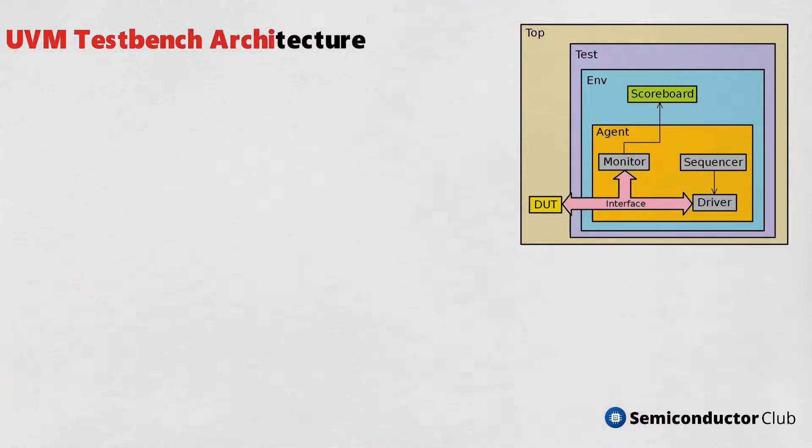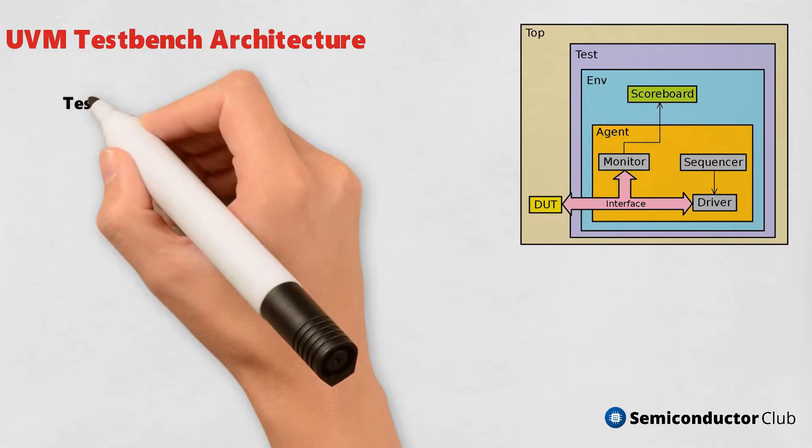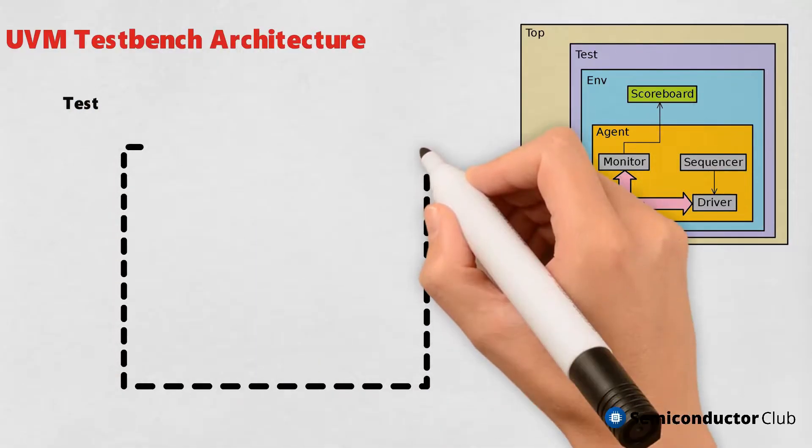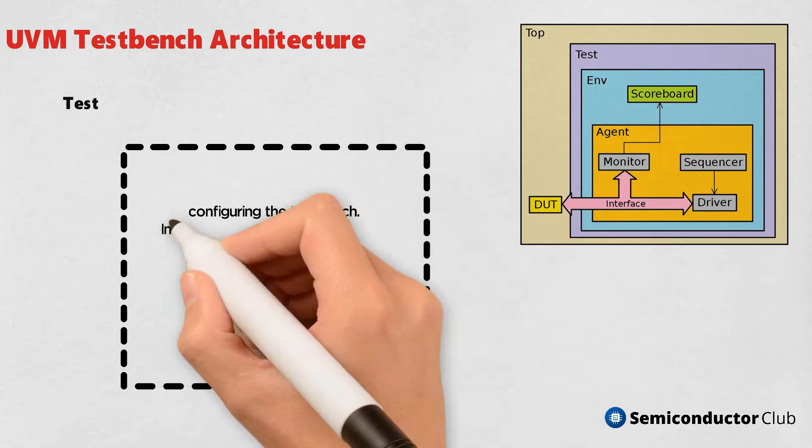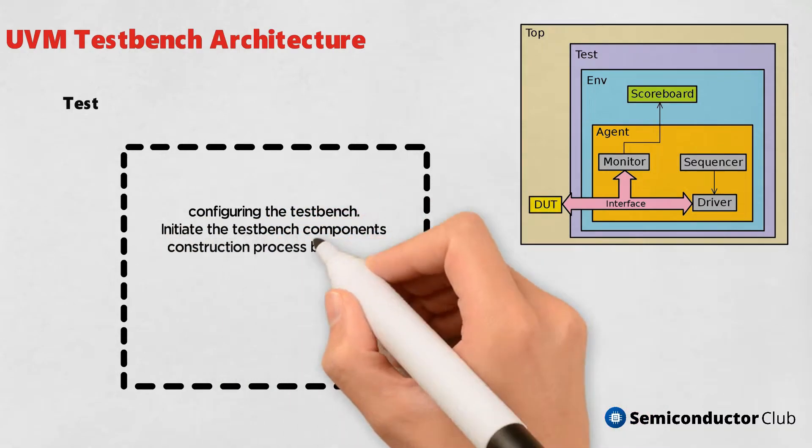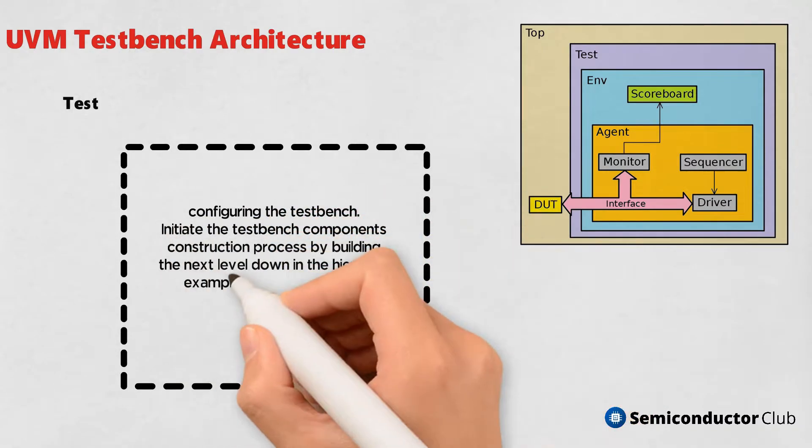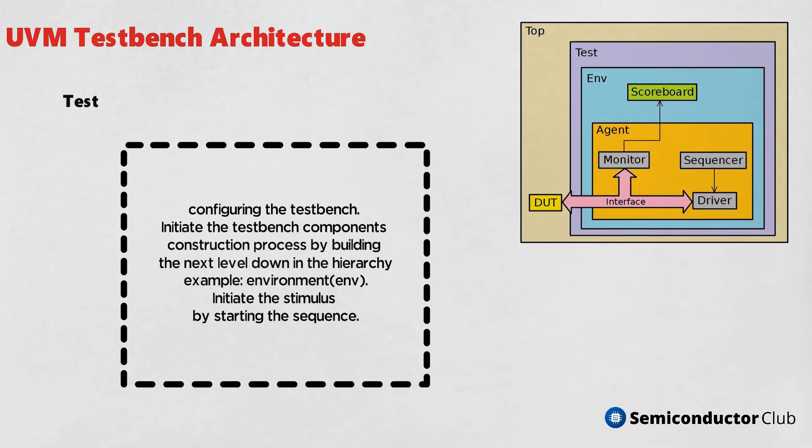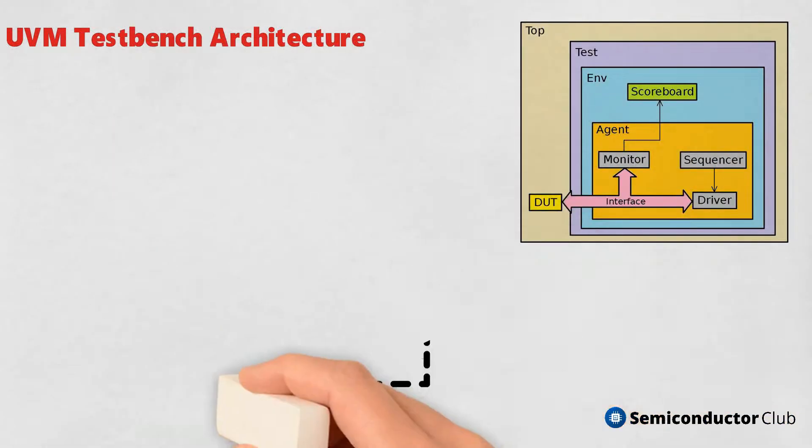UVM test bench architecture. Test: configuring the test bench, initiate the test bench components construction process by building the next level down in the hierarchy, example environment (env). Initiate the stimulus by starting the sequence.